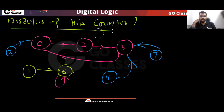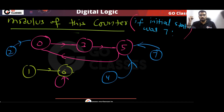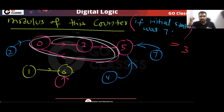If the initial state was 7, the modulus is still 3. The reason is that only this cycle matters — the main loop 0→3→5→0. The other paths are just the counter settling into this cycle.